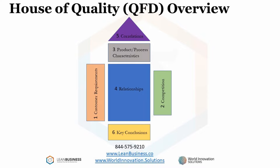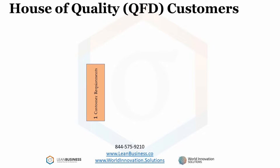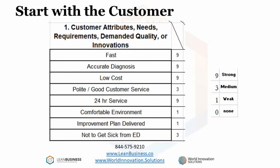Let's start with customer requirements. Customers and innovators supply this input. If you are designing a second emergency department to offload the 72% of patients that don't have emergencies, these customer desires — such as being fast or available over 24 hours — is a list that you need to come up with. This list is a prototype for a second additional emergency department. The column of numbers to the right is an arbitrary weighting of perceived value.